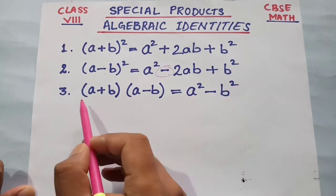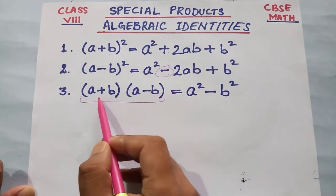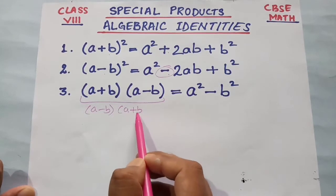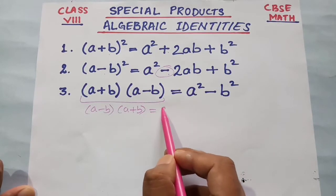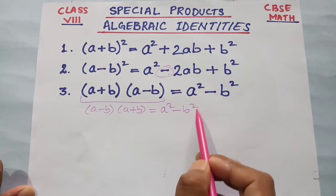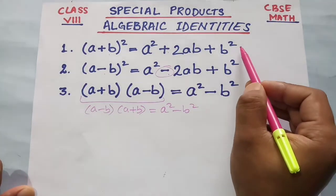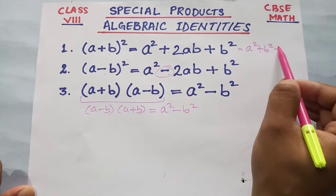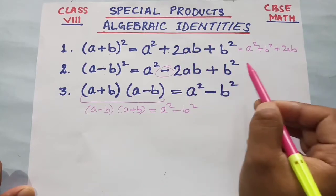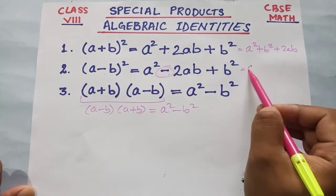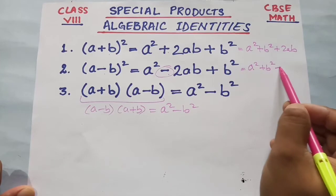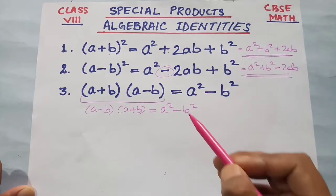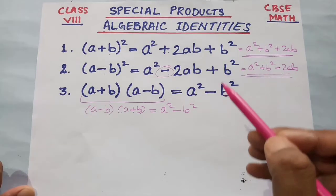We have to remember: when the sign is plus, the middle term is plus; when the sign is minus, the middle term is minus. There is no difference in the sign of b square. For identity 3, sometimes it is written as (a + b)(a - b) or (a - b)(a + b) — there is no difference, the formula gives a square minus b square either way.